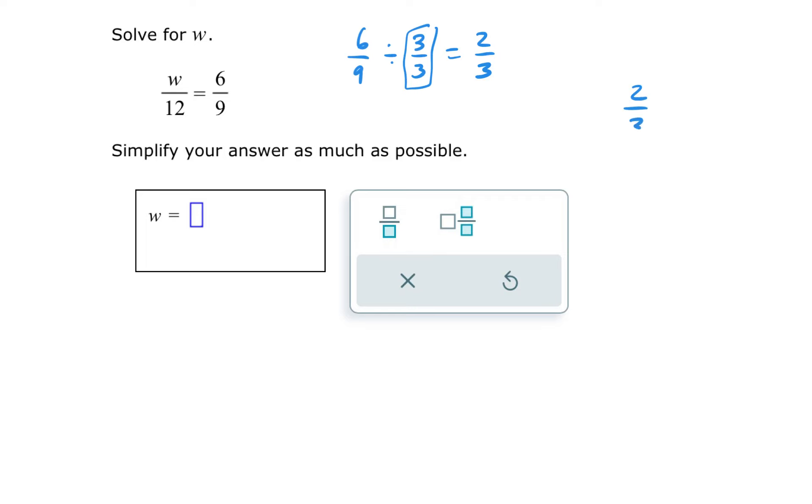I'm going to put 2 over 3 on the left and my variable on the right-hand side, so I'm multiplying. 3 times 4 is 12. 2 times 4 is 8.